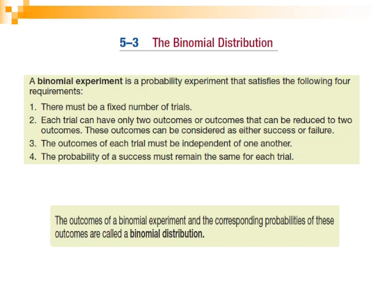Frequently we classify the two possible outcomes as success or failure, and we use that terminology a lot in binomial distribution. But success or failure doesn't imply that the outcome labeled success is necessarily good — it simply means we are interested in that particular outcome.